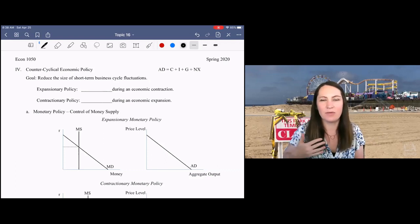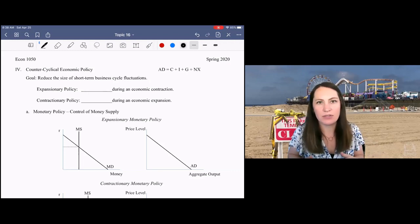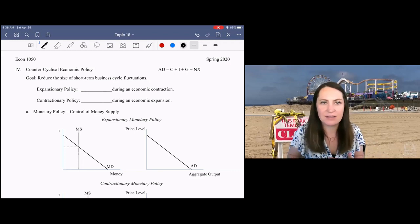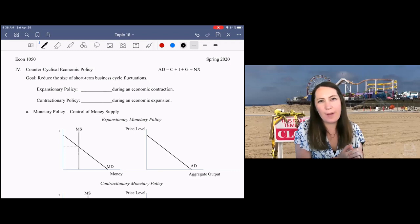Now that we understand how the model of aggregate supply and aggregate demand can be used to model short-term business cycle fluctuations, we can start to talk about how the government acts to minimize business cycle fluctuations.